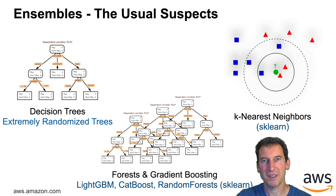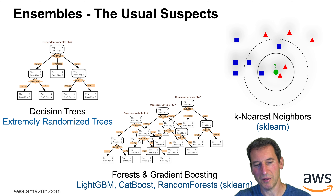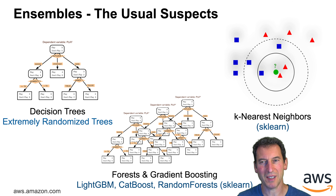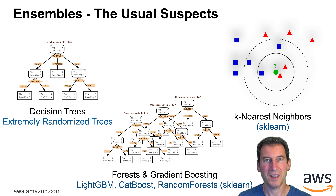Now that we have that, what do we do next? We take decision trees and forests like LightGBM, CatBoost, Random Forest from scikit-learn, and nearest neighbors, and throw this all together to get a decent model.